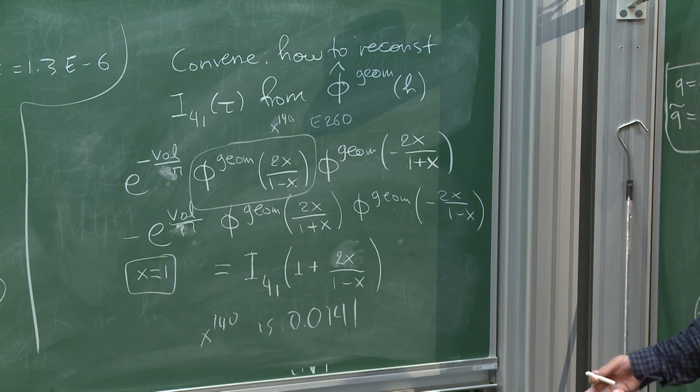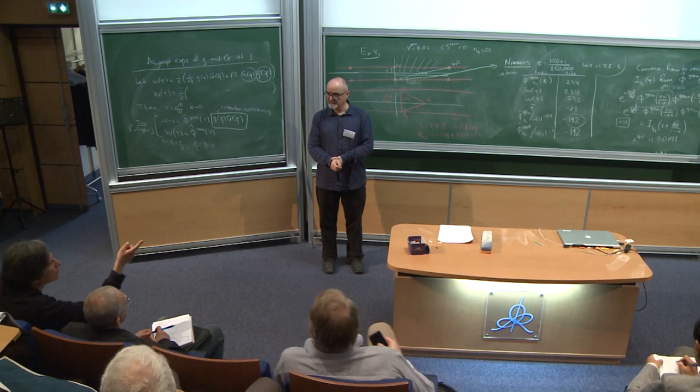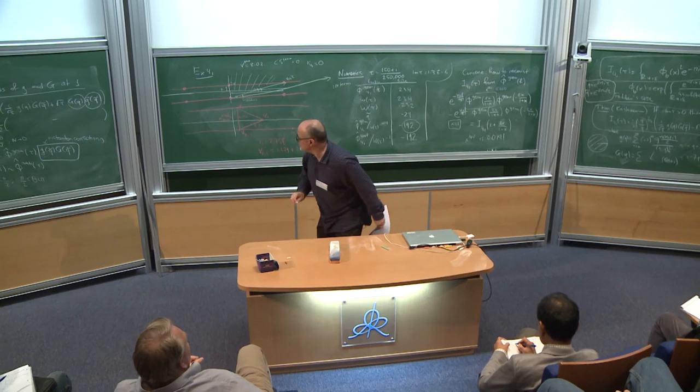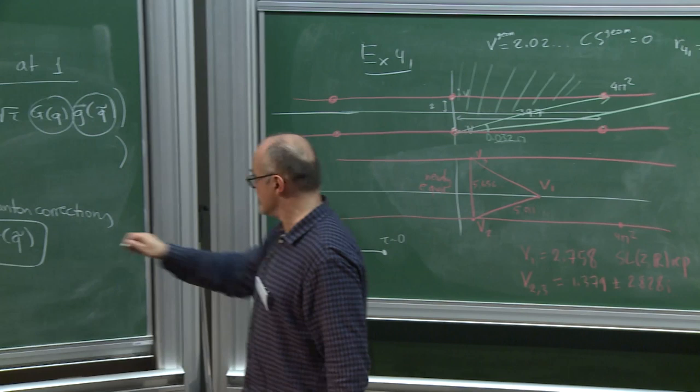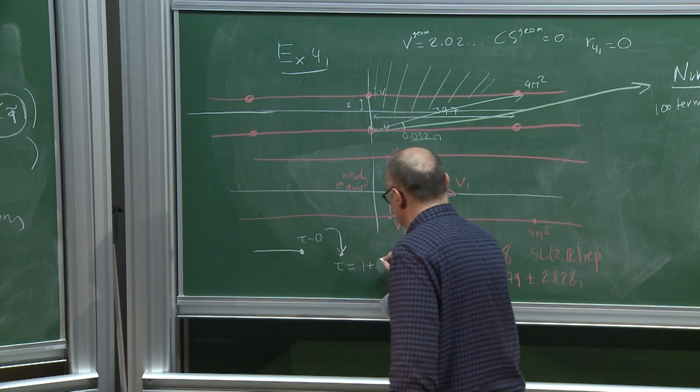Question from the audience: what is the origin of this change of variables? The state integral has an essential singularity at τ=0 — these are the divergent series. What I do is expand it at τ=1, setting τ = (1+2x)/(1−x) so that x is near 0 and the radius of convergence becomes 1. This is a full reconstruction of the state integral, bypassing the Borel plane. I still do not know why the singularities are where they are.